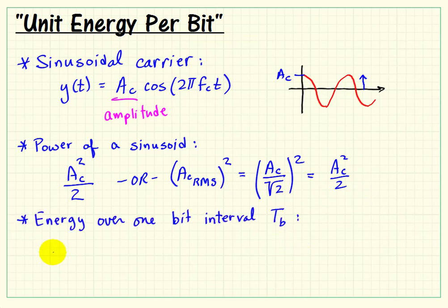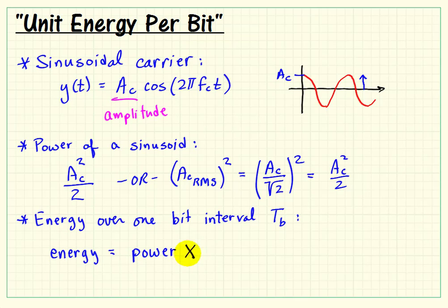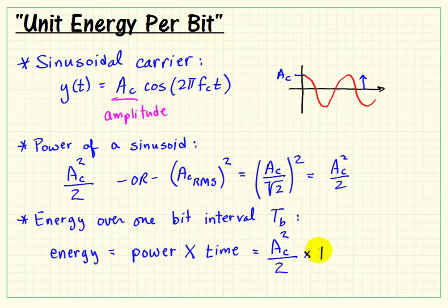The energy of the waveform over one bit interval — if we know that the power is constant — is simply power multiplied by the time period. So power times time equals energy. We've determined the power; the time is the bit interval, T sub b.